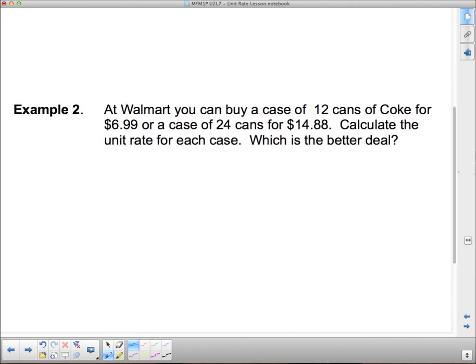Now let's see how we can use unit rate to solve a problem. At Walmart you can buy a case of 12 cans of Coke for $6.99, or a case of 24 cans for $14.88. Calculate the unit rate for each case, which is the better deal. So, when we're talking about this, we usually want to know the cost for one can. I'm going to put the 12 pack. I'm going to find it first. Remember we want how many dollars per can. So, I put dollars on top, $6.99 on top, per the number of cans, which is a 12 pack, so 12 cans.